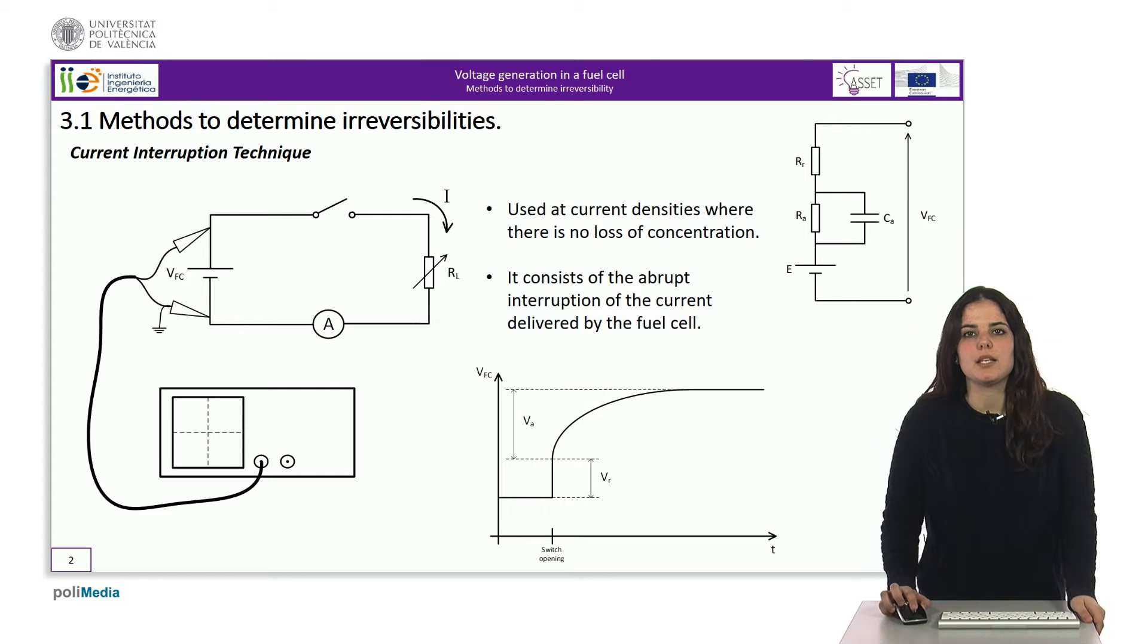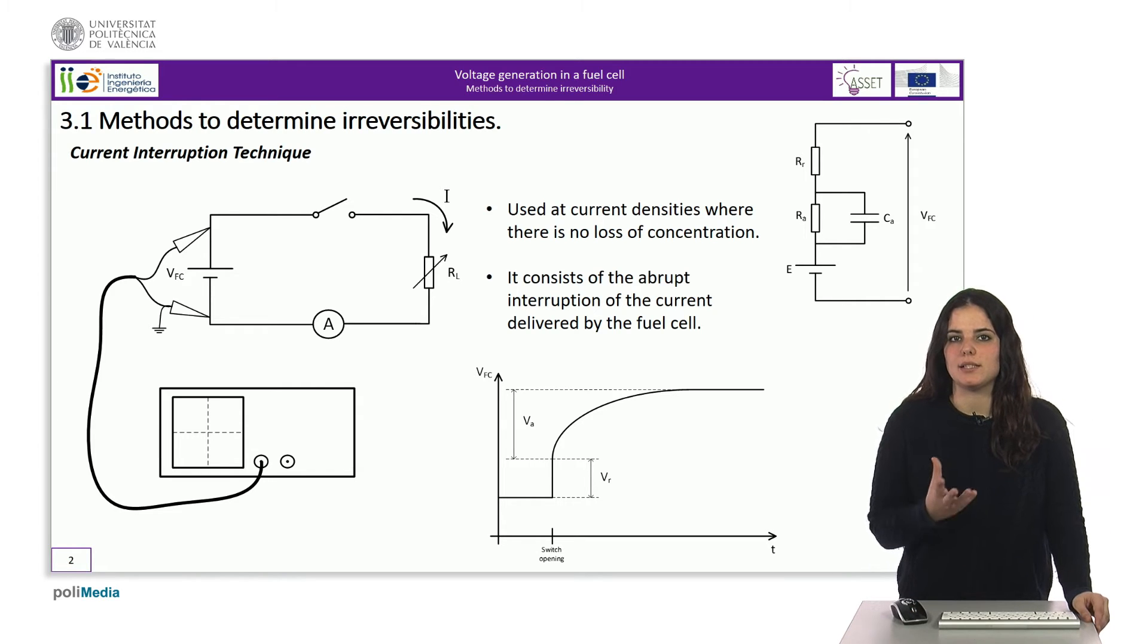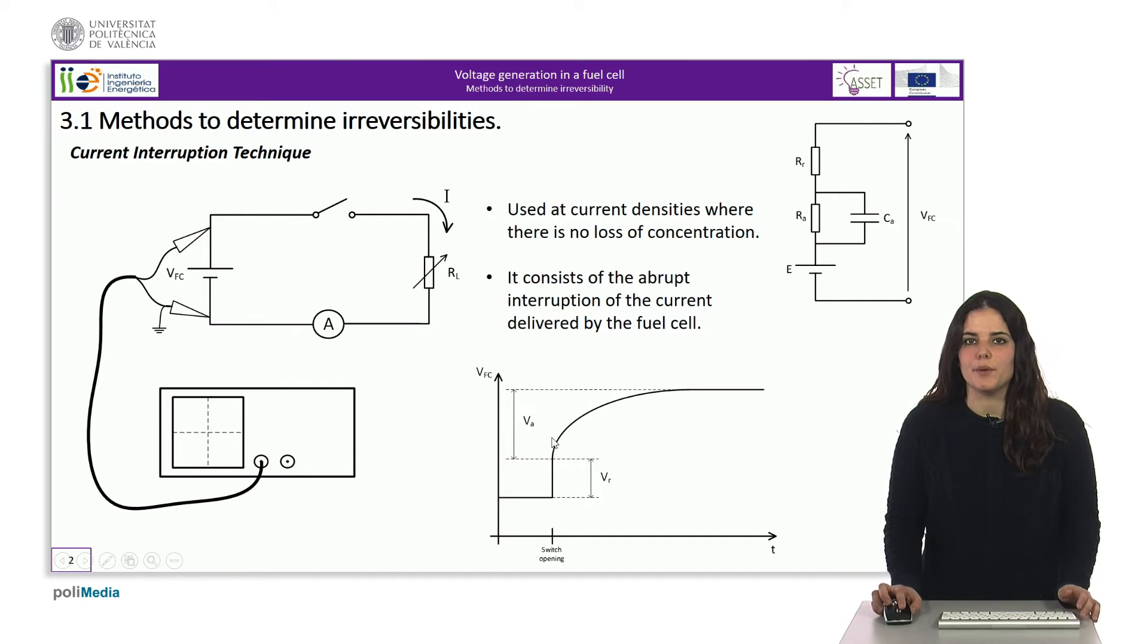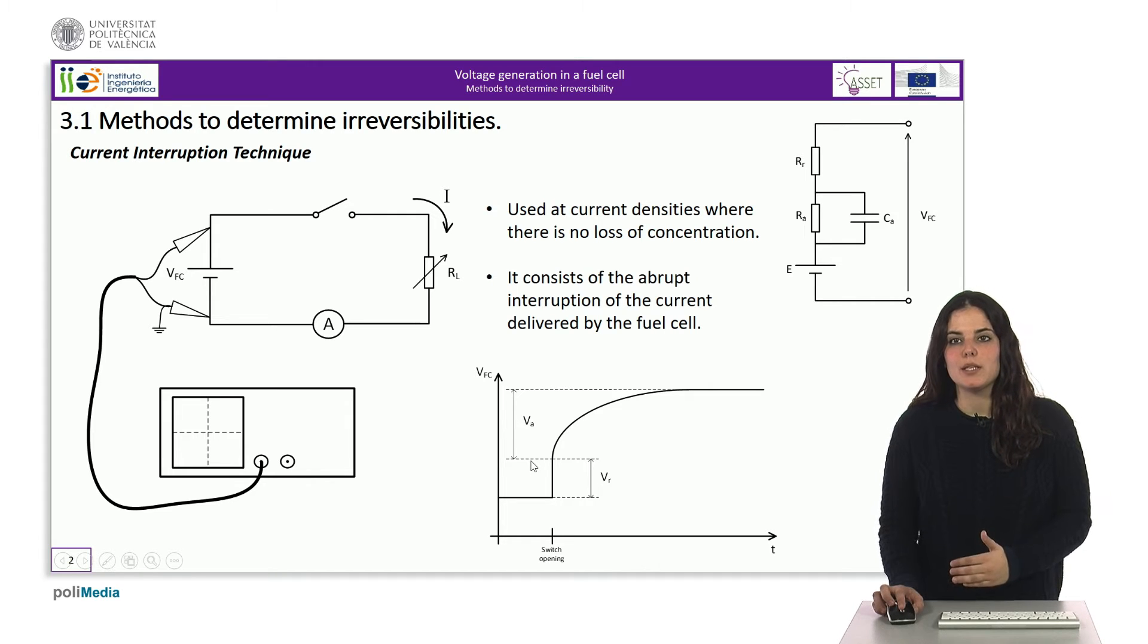The technique consists in knowing the current that generates the fuel cell at a certain point of operation, interrupting this current abruptly and seeing in the oscilloscope the evolution of the voltage. We can see this evolution in the figure. From the characteristic curve, we know that when the fuel cell delivers current, the voltage is lower than when it is in an open circuit. Therefore, the voltage will initially be that of the operating point, and when the current is suddenly cut, the voltage will grow. The first voltage range corresponds to the ohmic losses, while the second range corresponds to the activation losses.